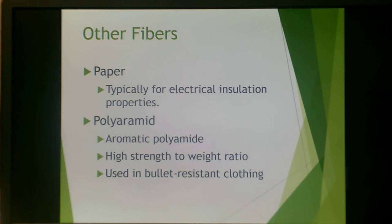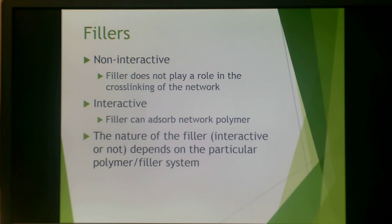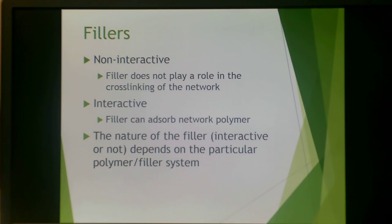Other fibers include paper, typically used for electrical insulation, and polyaramid. Polyaramid is an aromatic polyamide that gives a really good high strength-to-weight ratio and is often used in bullet-resistant clothing — the typical polyaramid you hear of is Kevlar. These can also be compounded into plastic formulations. Compounding refers to the process of mixing those fillers together into a plastic material.